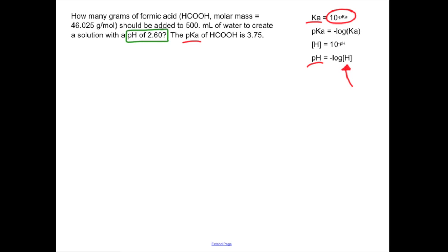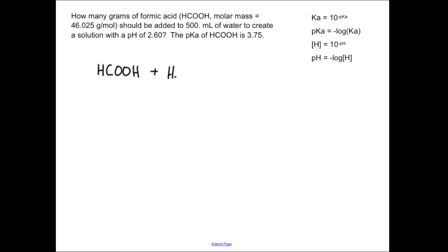We'll use our known equilibrium constant, do a little backtracking, and find what concentration of formic acid we need. Once we know the concentration, we'll calculate the grams needed. First, understand what the reaction looks like: the acid dissociation of formic acid. We have formic acid (aqueous) plus a water molecule in equilibrium — because this is a weak acid, dissociation is not complete — giving the conjugate base of formic acid plus the hydronium ion.